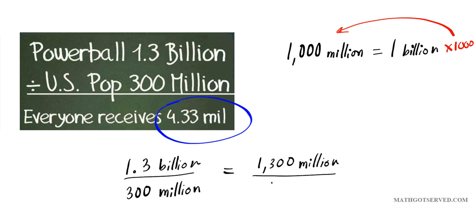Divided by 300 million. Now, this is the correct way of solving the problem. But in this solution right here, this is where the mistake lies.